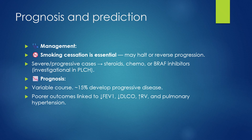As this is a smoking-related disease, cessation of smoking may halt or reverse the progression of the disease. For progressive or severe disease, treatment with steroids, chemotherapy, or BRAF inhibitors can be tried. It has a good prognosis; however, 15% of cases may show progressive disease, and there are factors linked to a poor outcome.